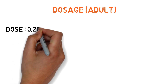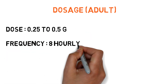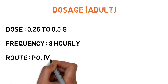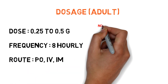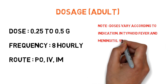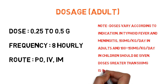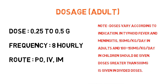The adult dose is 0.25 to 0.5 grams, with a frequency of every 8 hours, administered orally, IV, or IM. Note: doses vary according to indication. In typhoid fever and meningitis, the dosage is 150 mg per kg per day in adults and 100 to 150 mg per kg per day in children. Doses greater than 500 mg are given in divided doses.